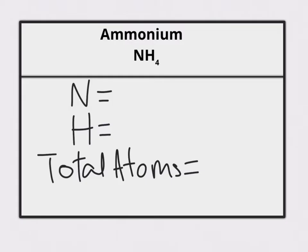The N stands for nitrogen, and the H stands for hydrogen. Looking at the 4 next to the H, that's going to tell us the number of hydrogen atoms found in the formula.